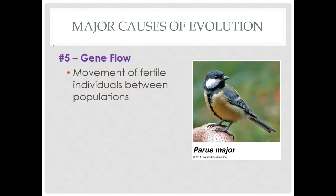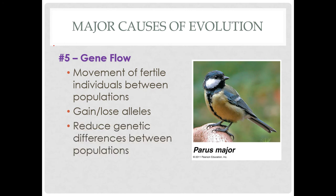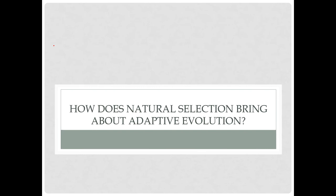Our last major cause of evolution is gene flow — the movement of fertile individuals between populations. This causes a population to gain or lose alleles; for example, the person who left might have carried the only red alleles, bringing them to another population while their original population loses them. This creates a blending effect between populations. If individuals freely move between populations and mate, those populations will continue resembling each other. But if you keep them separate, they may differentiate more over time.